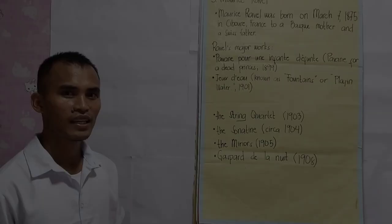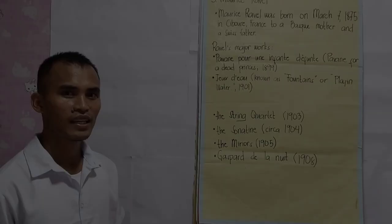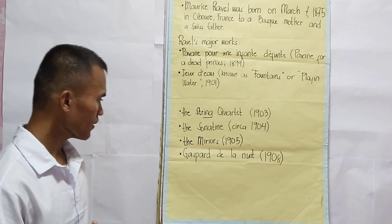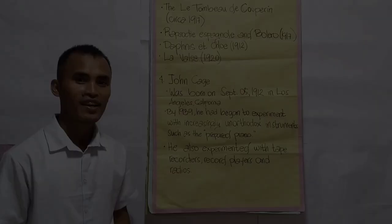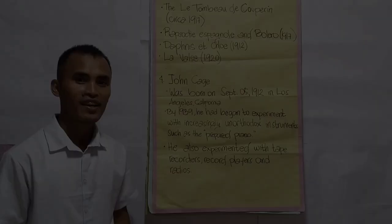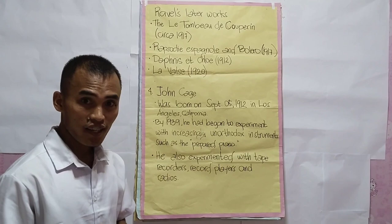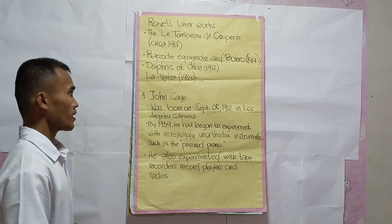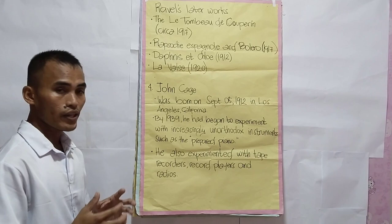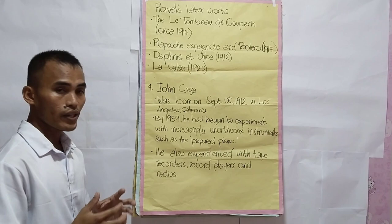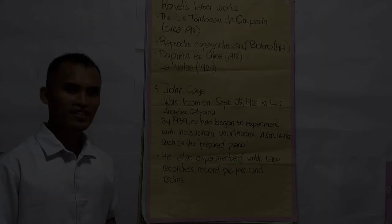Other Ravel major works include The String Quartet (1903), the Sonatine (circa 1904), the Miroirs (1905), and Gaspard de la Nuit (1908). Ravel's later works include L'Enfant et les Sortilèges (circa 1917), Rhapsodie Espagnole and Boléro (1917), Daphnis et Chloé (1912), and La Valse (1920). Maurice Ravel had many works, but the most well-known of his work is Boléro.